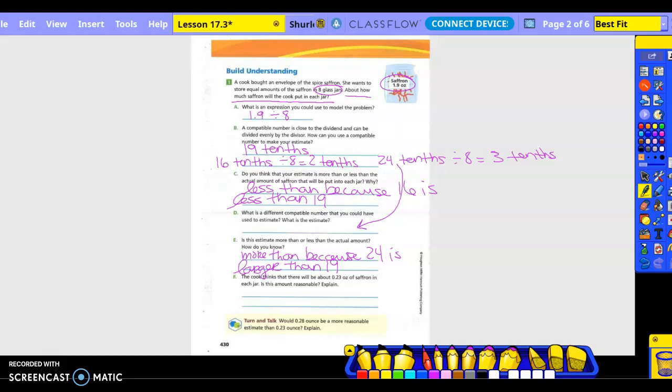The cook thinks that there will be about two thousand three hundred ounces of saffron in each jar. Is this amount reasonable? We got our estimate to be two tenths, which would be written as zero point two. So is two thousand three hundred close to two tenths? No.